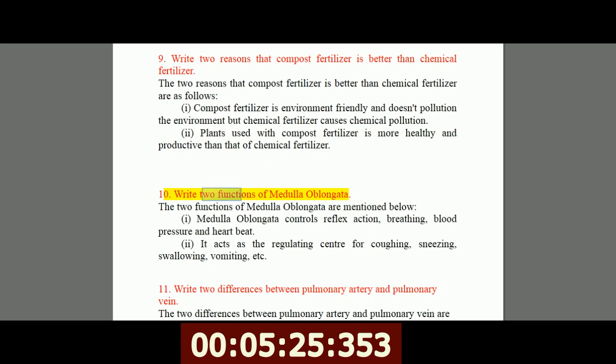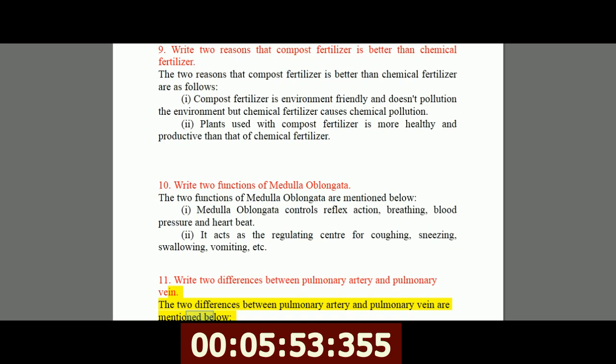10. Write two functions of medulla oblongata. The two functions of medulla oblongata are mentioned below. I, medulla oblongata controls reflex action, breathing, blood pressure and heartbeat. II, it acts as the regulating center for coughing, sneezing, swallowing, vomiting, etc. 11. Write two differences between pulmonary artery and pulmonary vein.